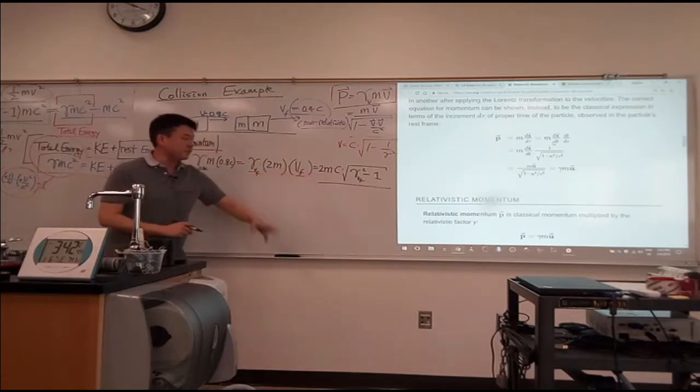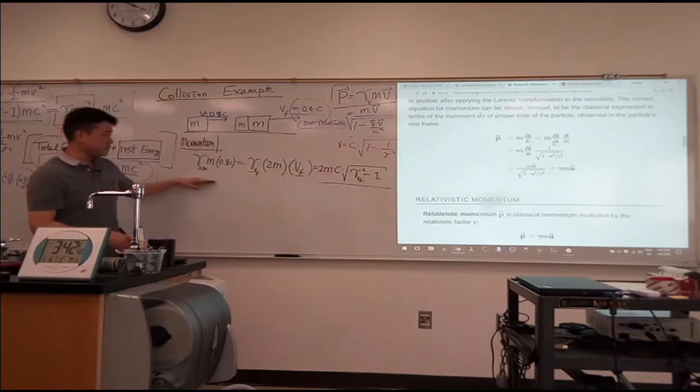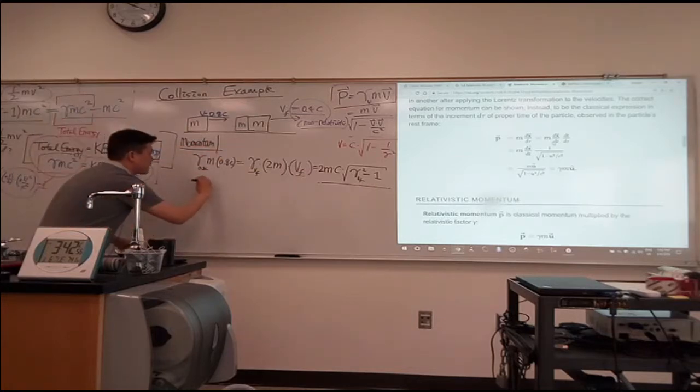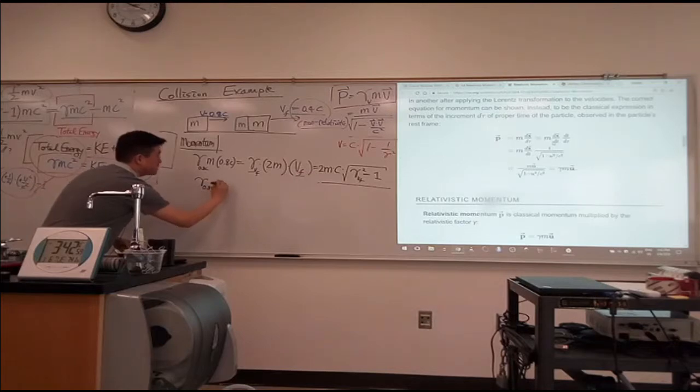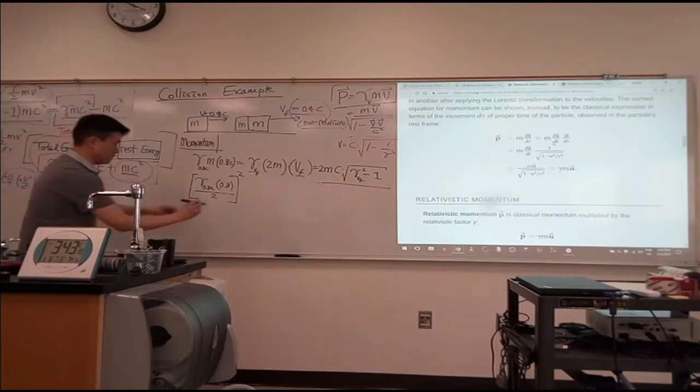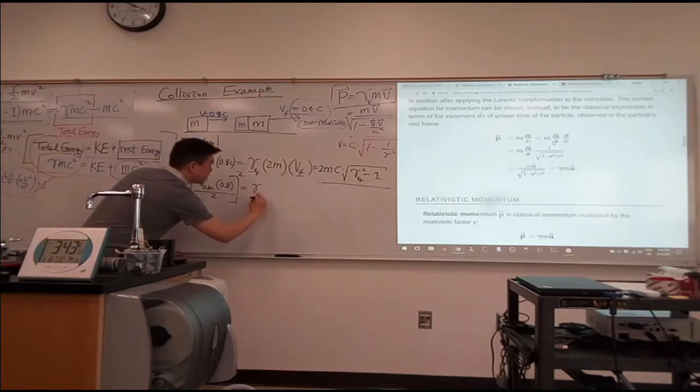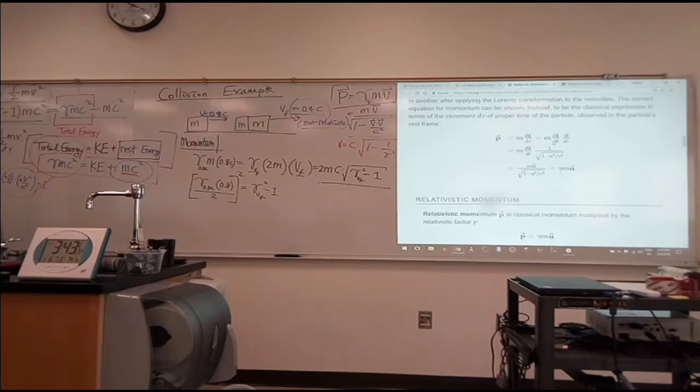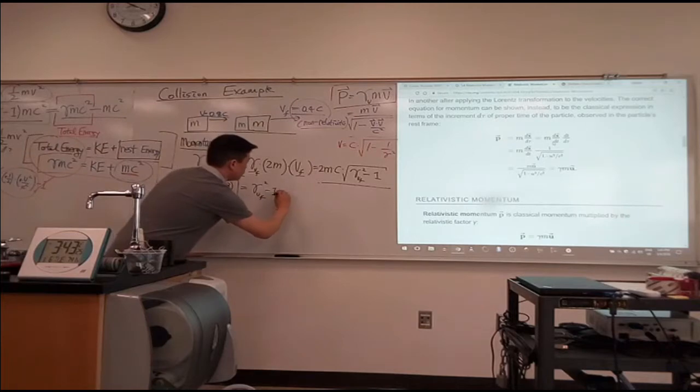I think I'll have enough time to do it twice. Once wrong and then once correctly. So to solve for this gamma V final, I have to square both sides to get rid of this square root. Right? So let me actually move this over first and then square both sides. So M's cancel out, C's cancel out. So I get gamma 0.8C times 0.8. The whole thing... Oh, wait. The whole thing divided by 2 squared is equal to gamma V final squared minus 1.